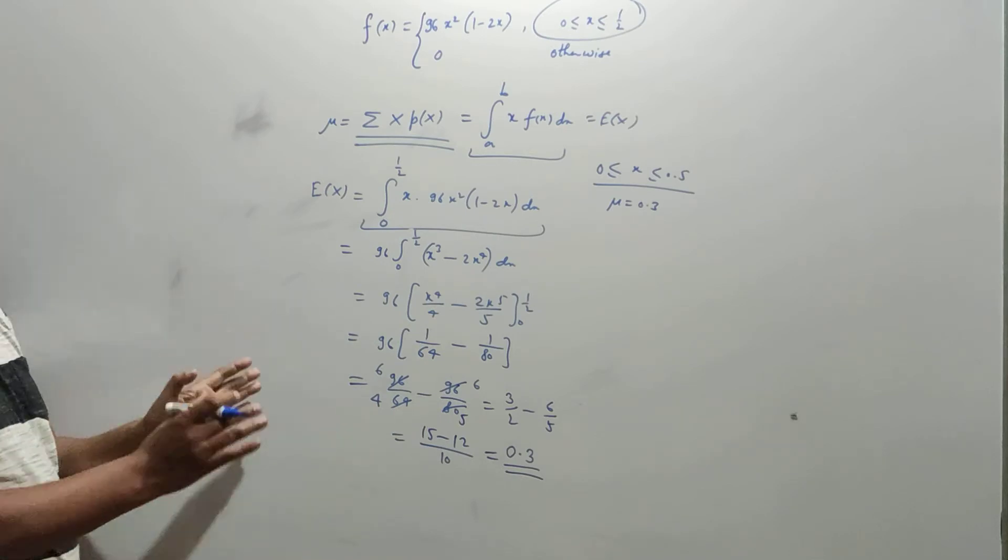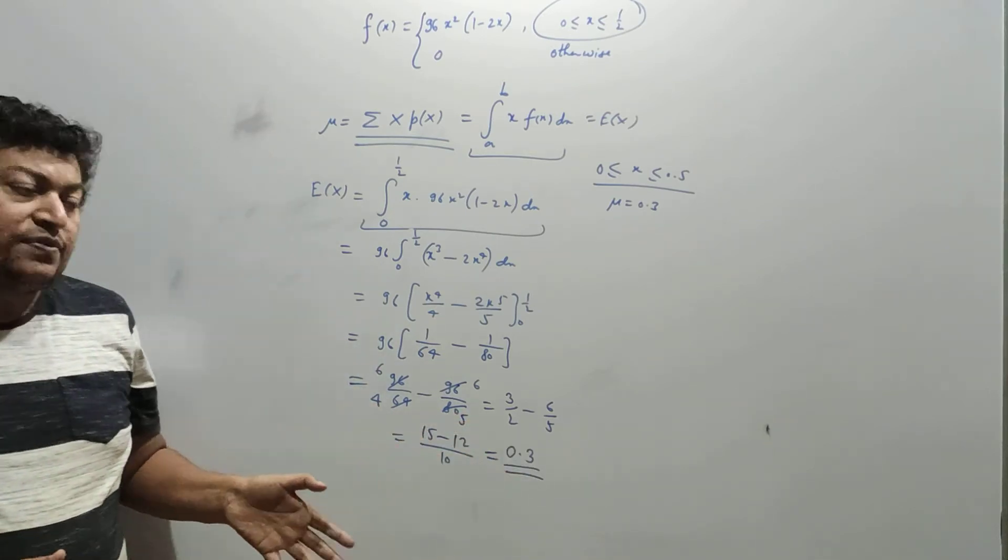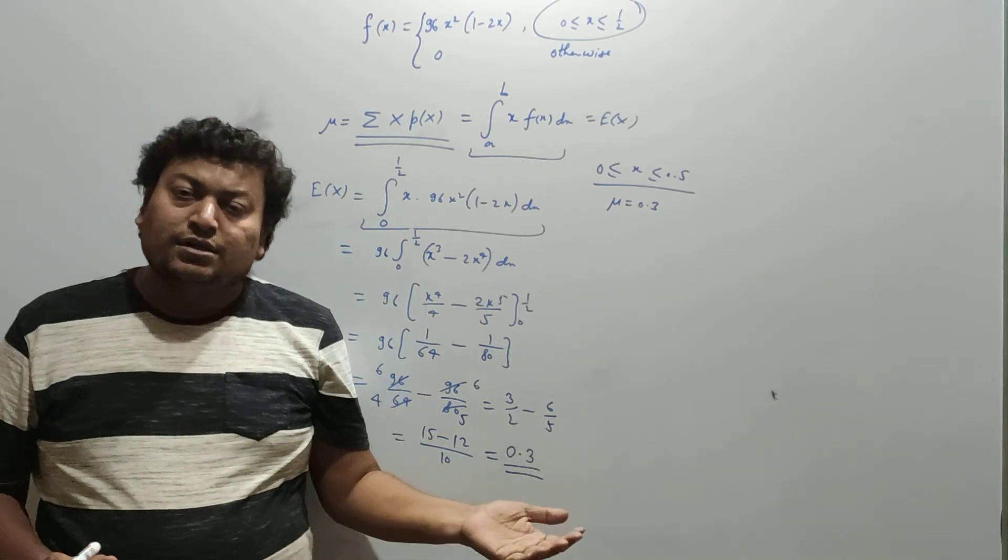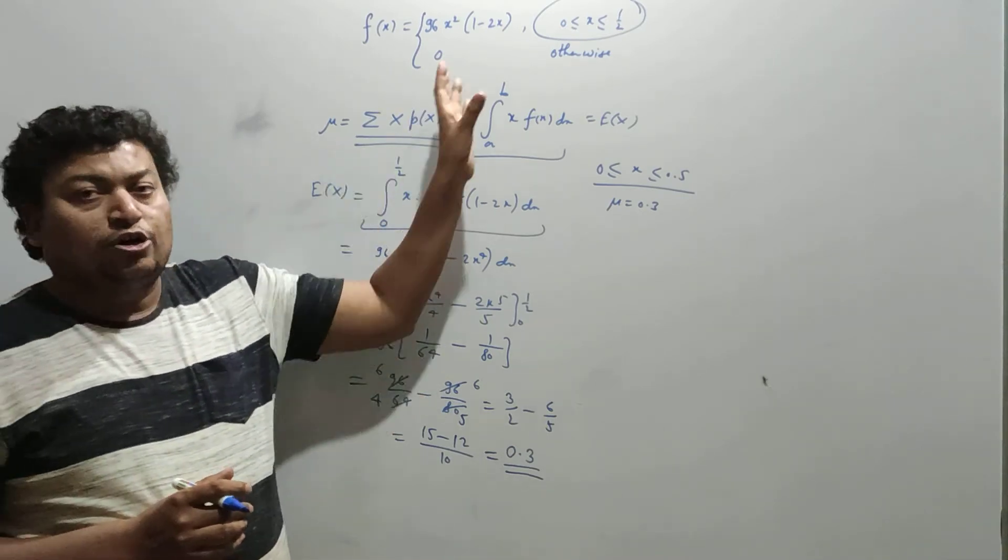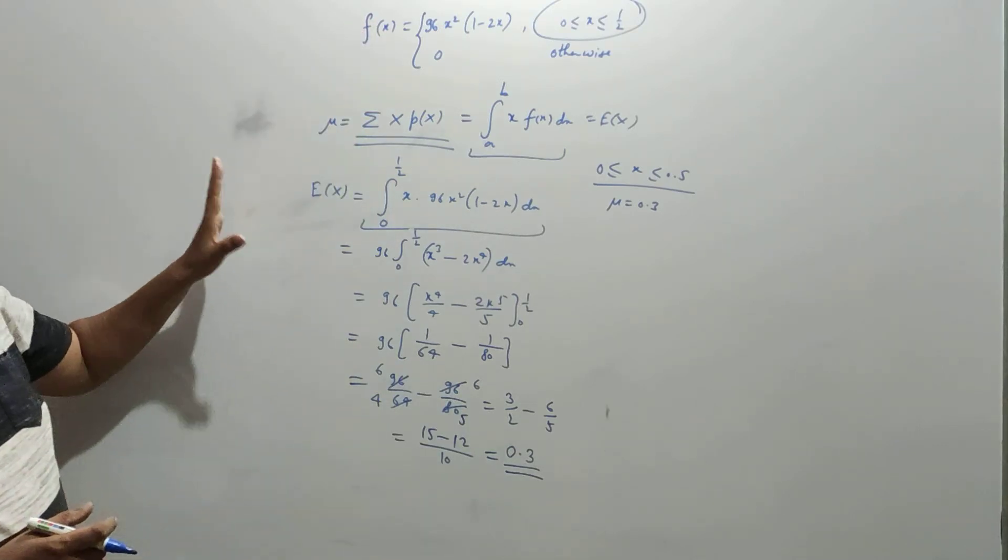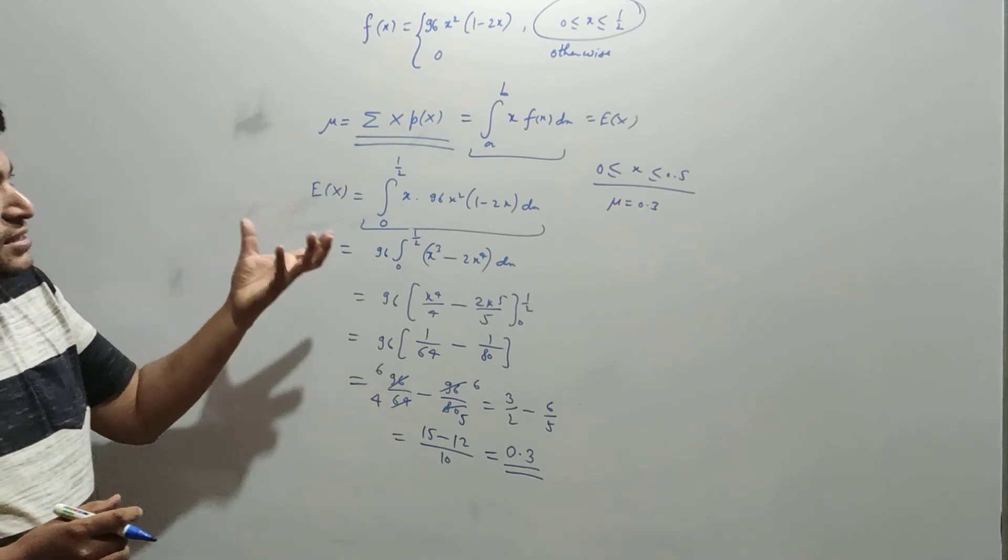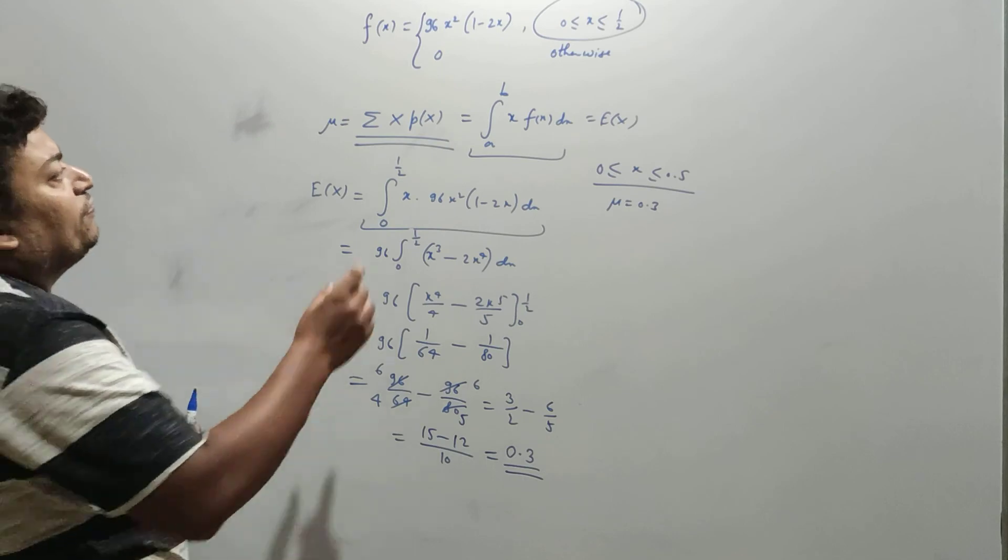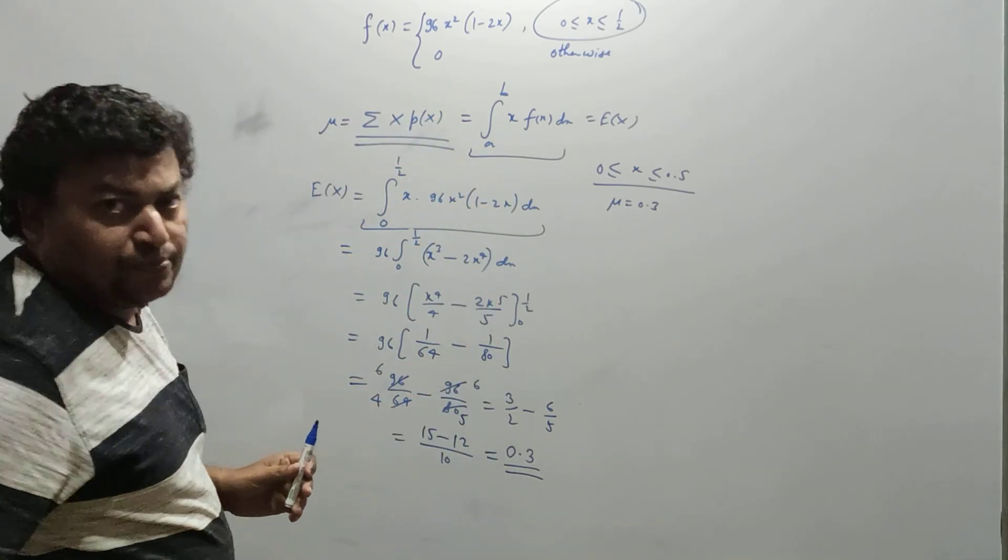In the future, we will have many PDFs which might be symmetrical, and the mean will simply be (initial value + final value)/2—basically the midpoint of the two endpoints. But I intentionally took a PDF which is not symmetrical so we can understand a general PDF. In the next video, we will find median and mode for the same PDF. Thank you.